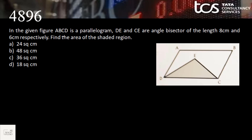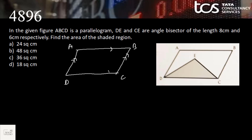In this given figure, ABCD is a parallelogram — opposite sides are equal and parallel to each other. DE and CE are angle bisectors. The angle bisector of D meets with the angle bisector of C at point E, and they are of length 8 and 6 centimeters respectively. Find the area of the shaded region, which is triangle DEC.